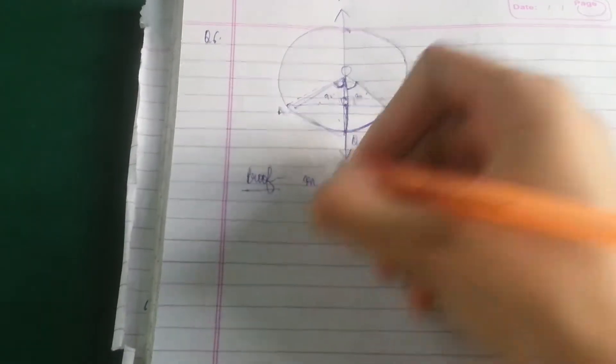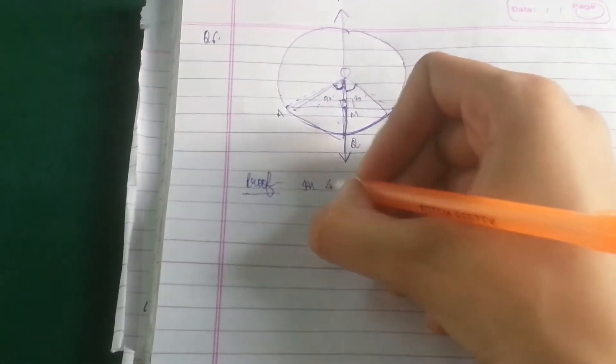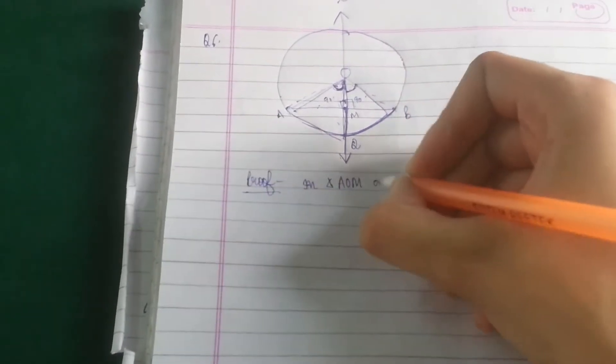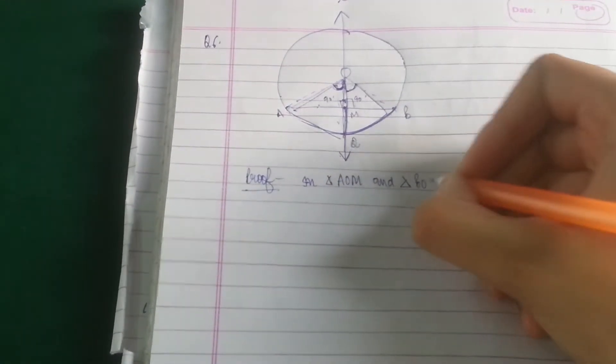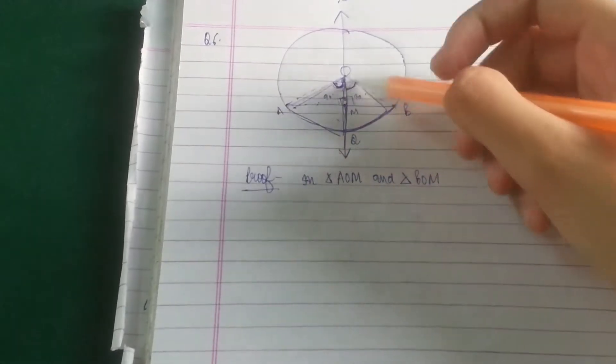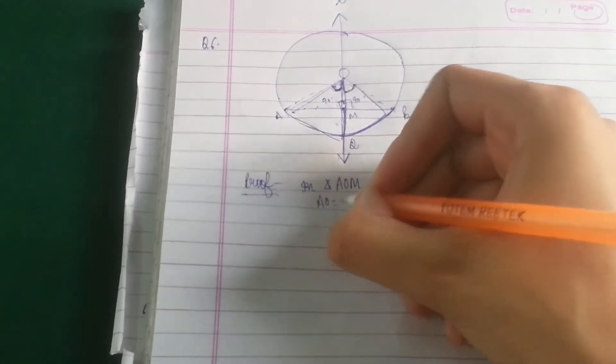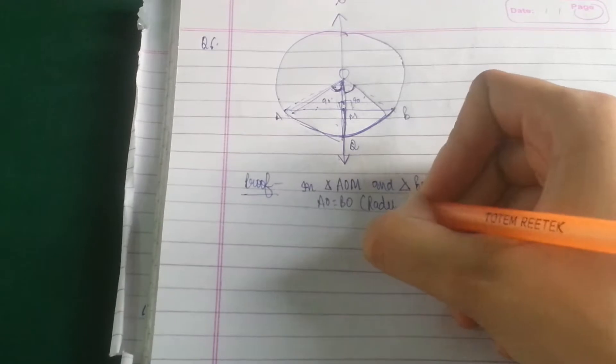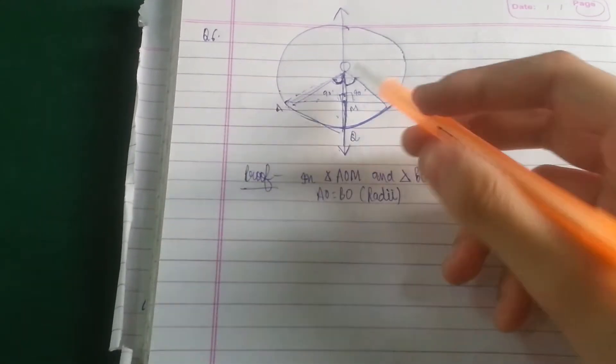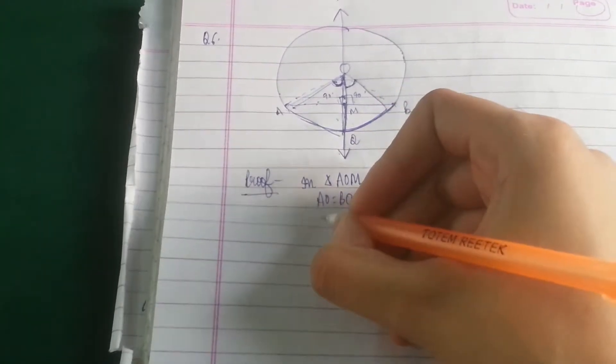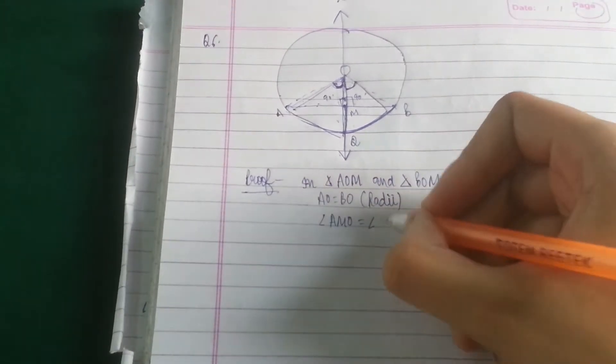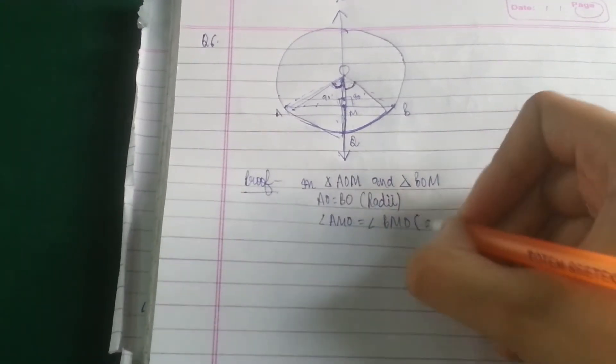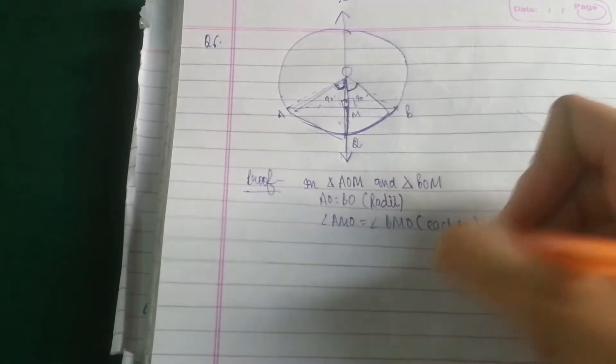So in the proof, we will take, let's say it's point M in triangle AOM and triangle BOM. In these two triangles, AO will be equal to BO. Now I think you might know the reason. It is the radii of same circle. Now angle AMO will be equal to angle BMO because each is equal to 90 degrees because we have supposed that L is the bisector of the chord.